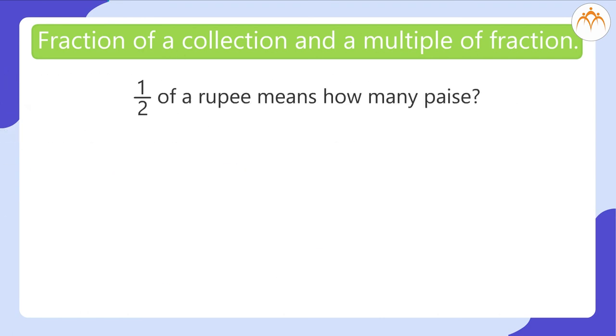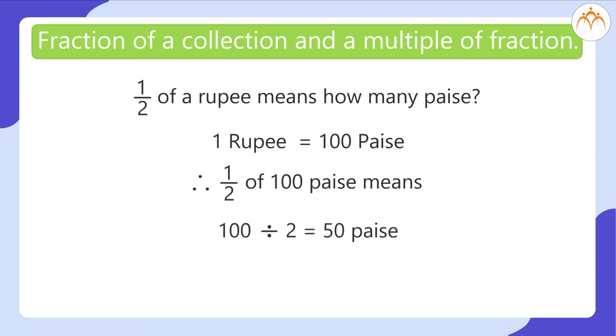1 by 2 of a Rupee means how many Paise? 1 Rupee is equal to 100 Paise. Therefore, 1 by 2 or 1 half of 100 Paise means 100 divided by 2 which is equal to 50 Paise.